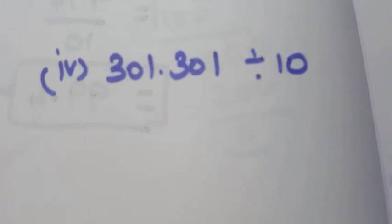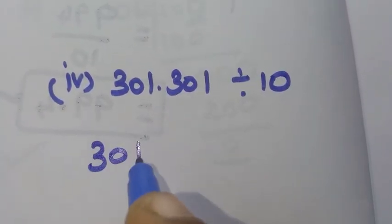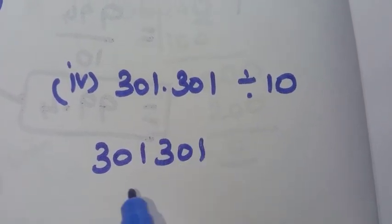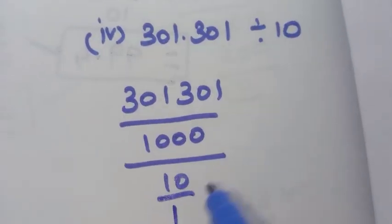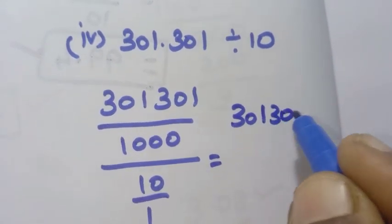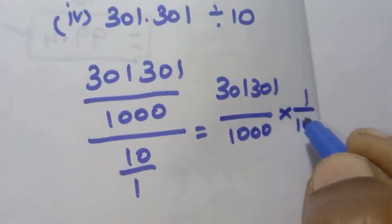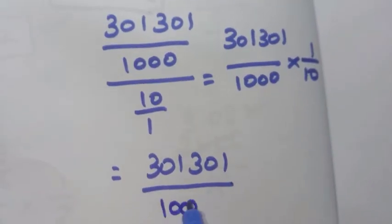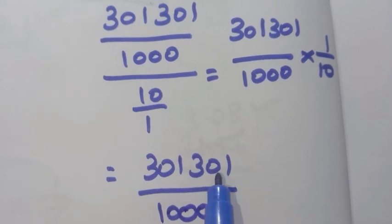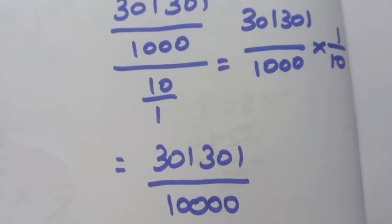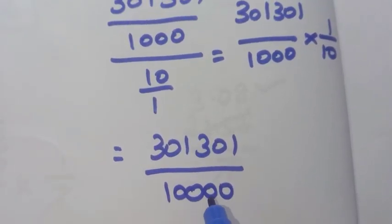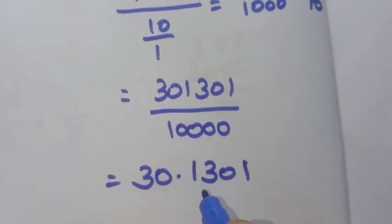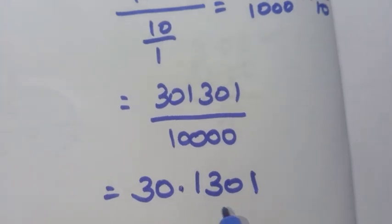Fourth sum: 301.301 divided by 10. 301.301 has 3 decimal places, so it is 301301 by 1000. Divided by 10, giving 301301 by 1000 into 1 by 10, that is 301301 by 10000. There are 4 zeros, so 4 decimal places. The answer is 30.1301.